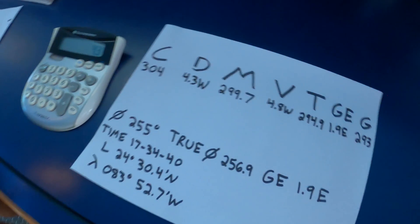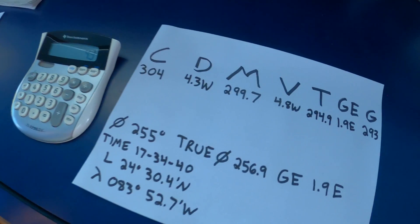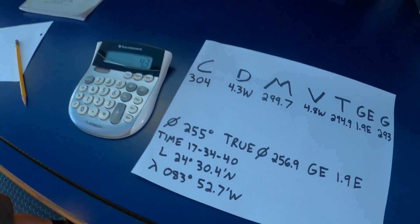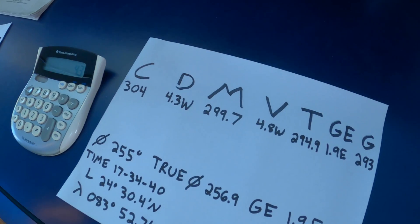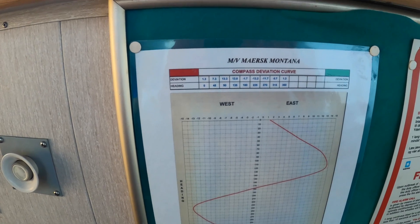Deviation is affected by changes in the ship. So loading cargo or being struck by lightning, anything that can affect the magnetic field of the ship. The deviation is also affected by the heading of the ship.